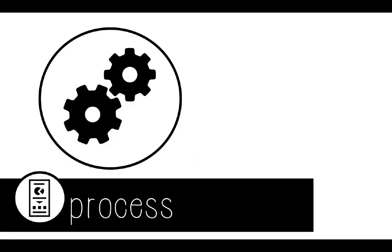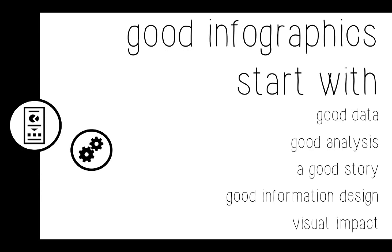We've talked about what goes into infographics and where to get resources, but not about how to actually design one — and these principles also apply to your persona poster. Good infographics start with a few things. First, you need good data — reliable and valid — and then you have to do good analysis. It's not enough to just put descriptive numbers or charts on a page. You've got to think about the story you're telling, do the analysis, find your story, and then design that story in a cohesive way so that it's told in one discrete object. They need to be visually impactful and have good information design.